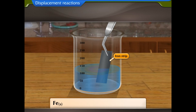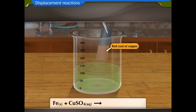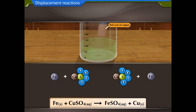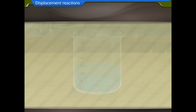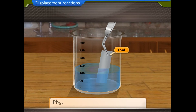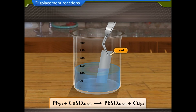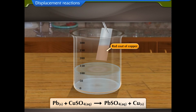If a strip of iron is dipped in a solution of copper sulfate, a red coat of copper is seen on the iron strip and the blue colored copper sulfate solution turns green. Iron, being more reactive than copper, can displace copper from its solution. Lead is another metal which is more reactive than copper and can displace it from copper sulfate. Let us discuss the next type of reactions: double displacement reactions.